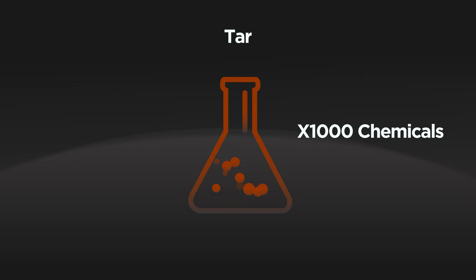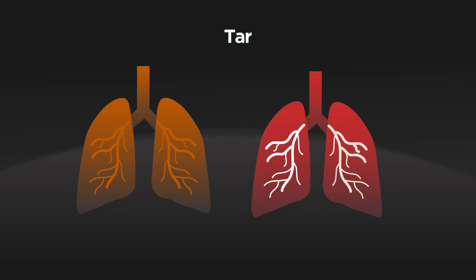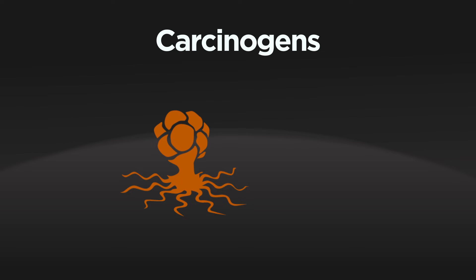Tar contains over a thousand chemicals. It forms a tacky brown or yellow residue, which is why sometimes smokers have stained teeth—and if you could see them, stained lungs too. Some of the chemicals in tar are carcinogens, so they cause cancer, making lung, mouth, and throat cancers more common in smokers.